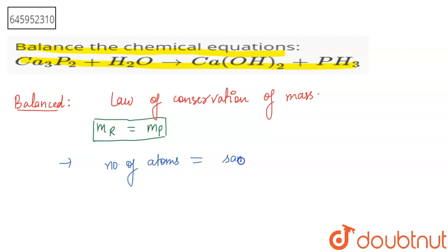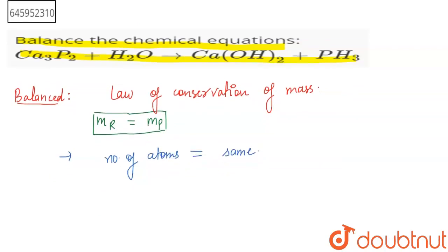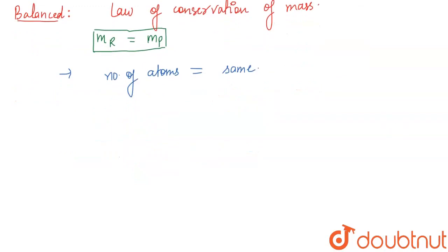On both sides the equation is balanced. So the equation we have is Ca₃I₂ plus H₂O, then calcium hydroxide Ca(OH)₂ plus PH₃.